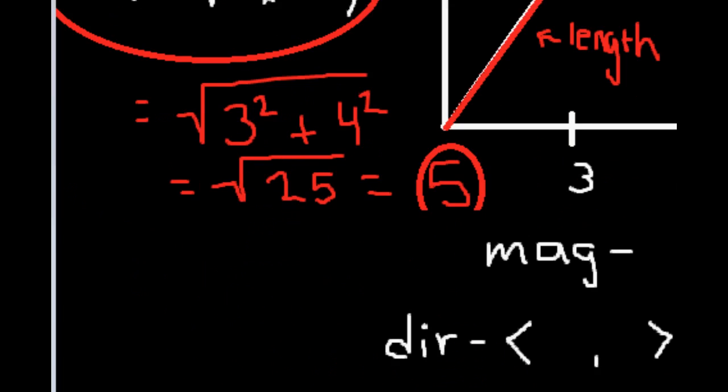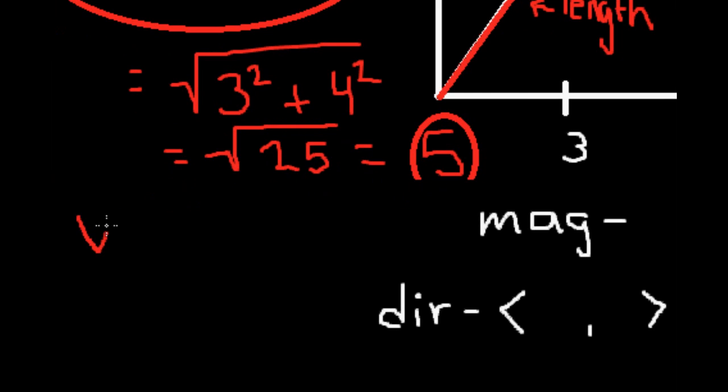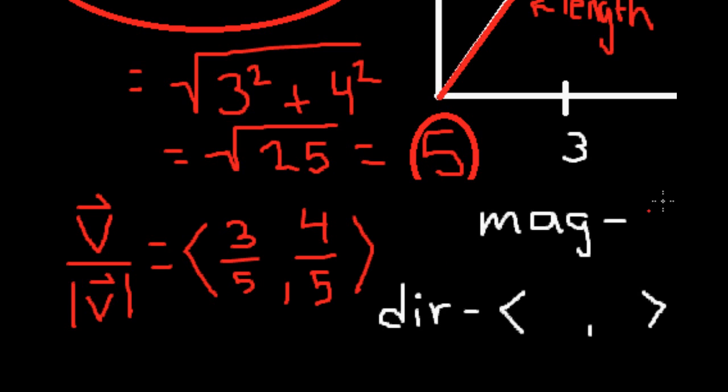Now, to find the direction of our vector, we must divide each component by the vector's magnitude. This process is called normalizing and produces a direction vector or a unit vector whose magnitude is 1. We now have a magnitude and direction describing our original vector, which brings us to another way to represent a vector.